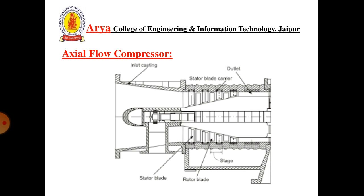This is a sectional view of the Axial Flow Compressor, which contains inlet casing at the left-hand side and at the right-hand side it has the outlet, following the stationary blade carrier on which stationary blades are mounted. At the center we have the shaft with the mounted impeller, and on the impeller we have the rotor blades. The combination of stator blade and rotor blade is called a stage.